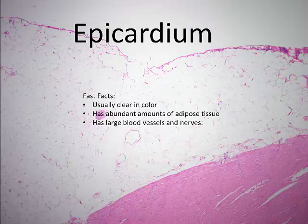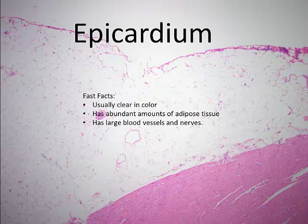The last major part of the heart's histology is the epicardium. This layer is the visceral layer of the pericardium and is adjacent to the myocardium. The outer part is lined with mesothelium. The epicardium can contain an abundant amount of adipose tissue with large blood vessels and nerves that are used to supply the heart.